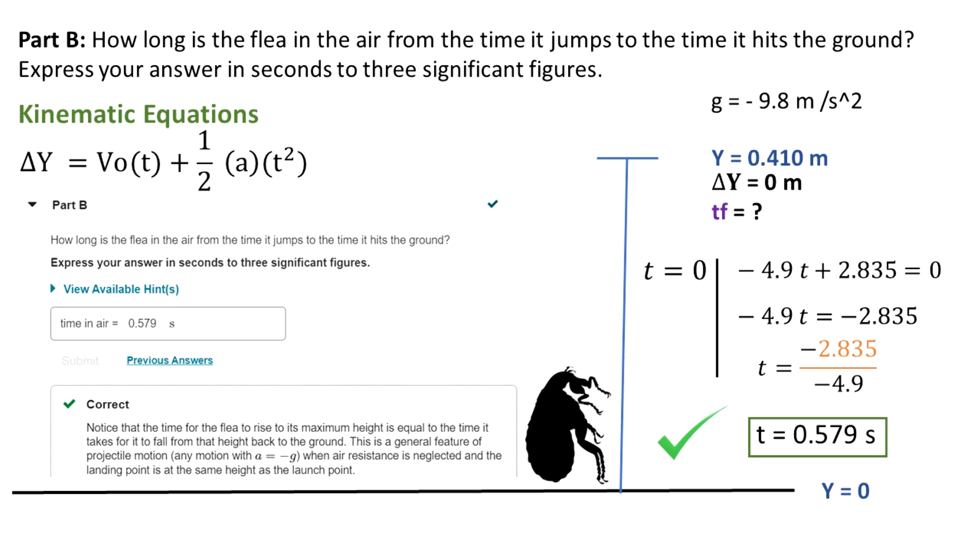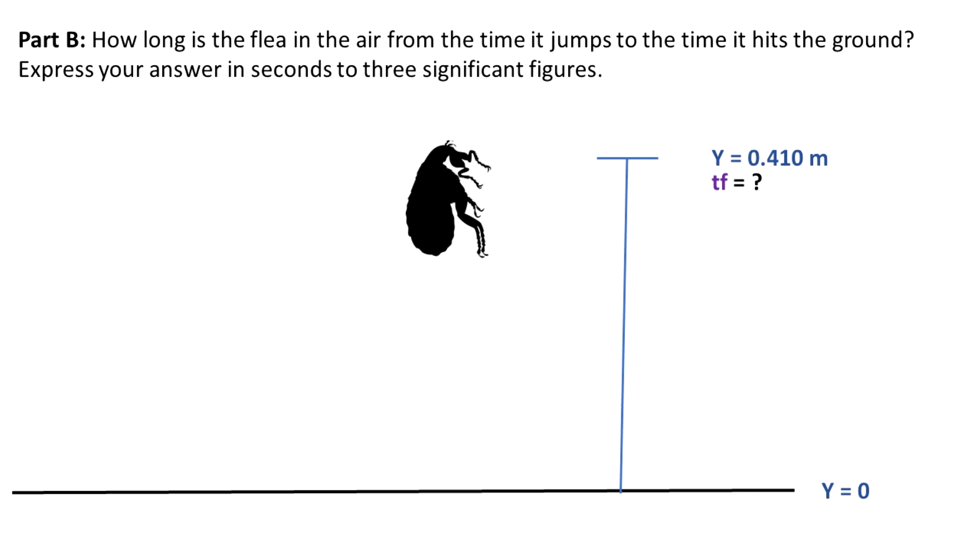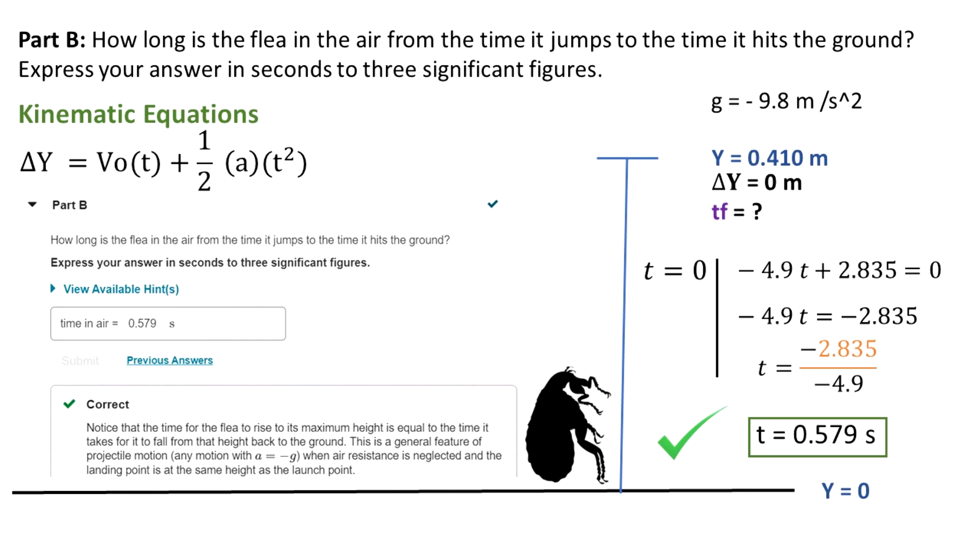This is the amount of time that it took the flea to jump, go up, and then come back down to the ground to the position where it was before, in the moment the experiment started.